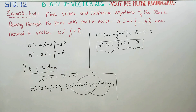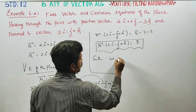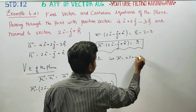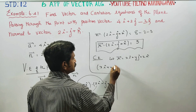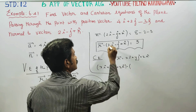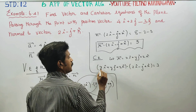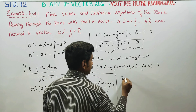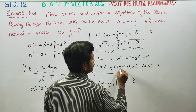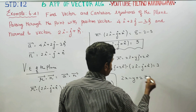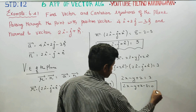After finding the vector equation, we must find the Cartesian equation. Let r = xi + yj + zk. Substituting: (xi + yj + zk) · (2i - j + k) = 3, which gives 2x - y + z = 3. Therefore, 2x - y + z - 3 = 0 is the Cartesian equation.